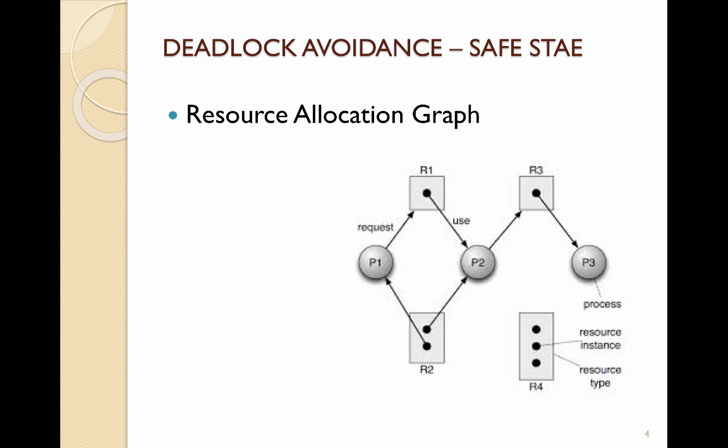P1 is requesting resource 1, which has only one instance and is currently in use by P2. P2 is also using resource 2 and requesting resource 3, which has been given to P3. There won't be a problem here because when P3 finishes with resource 3, it will be freed, then P2 can use resources 1, 2, and 3, and then P1 can use resource 1. So this is a safe situation.